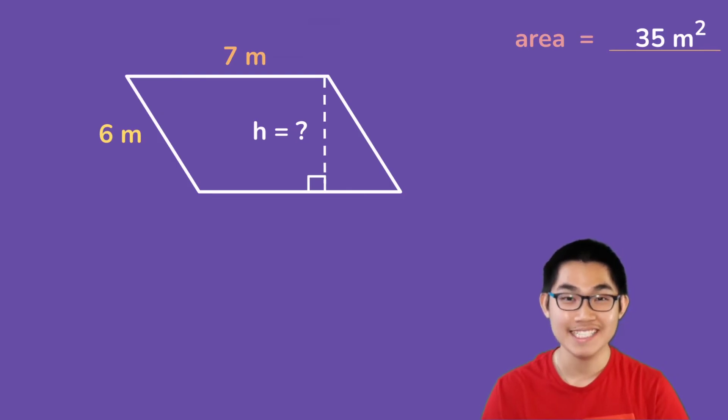Now this one is the last example we're going to do today. And so in this parallelogram, we are given an area of 35 meters squared. We know that the base is 7 meters, we know that this side is 6 meters. So what is the height? If you know how to do it, you are welcome to try.